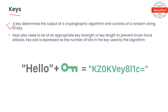Keys. Cryptographic algorithms and keys work together. A key determines the output of a cryptographic algorithm and consists of a random string of bits. Keys used in cryptography provide secrecy. A principle known as Kerckhoffs's principle states that only the secrecy of the key provides security. This is particularly important in relationship to the associated algorithms. An algorithm itself does not need to be kept secret. Depending on the type of algorithm used, either the same key is used for both encryption and decryption, or mathematically related keys are used.